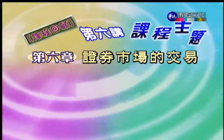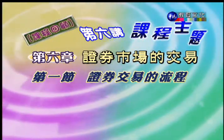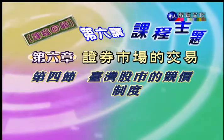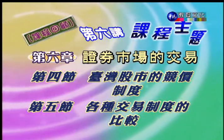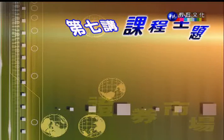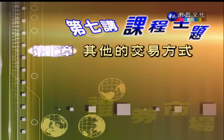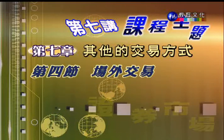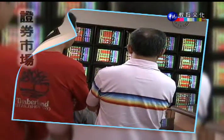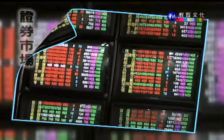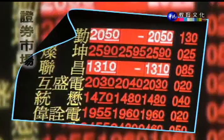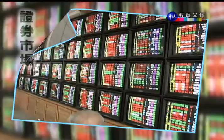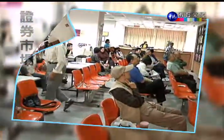各位同学大家好，欢迎收看证券市场。在课程进行之前，我们先来回顾一下前一讲次的课程主题。在前一讲次中，我们讨论的内容是第三篇证券市场的交易与机制中的第六章，包括第一节证券交易的流程、第二节证券交易的规范、第三节竞价制度、第四节台湾股市的竞价制度、第五节各种交易制度的比较。那么本讲次我们要进入第七讲，今天要讨论的主题内容是其他的交易方式，包括零股交易、巨额交易、盘后交易、场外交易、全额交割股票以及管理股票。